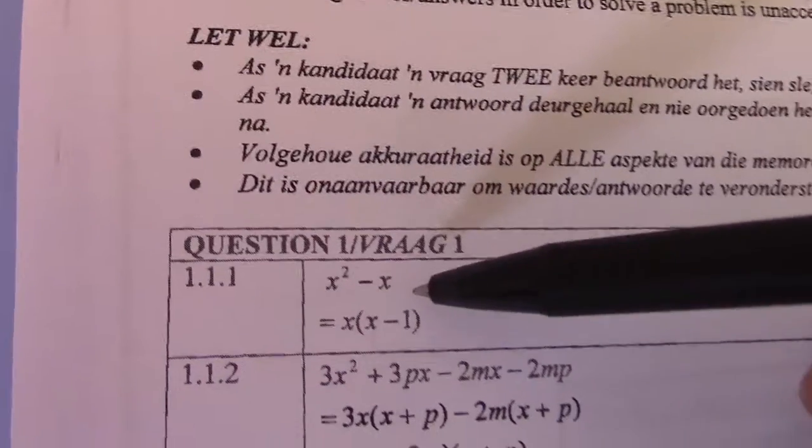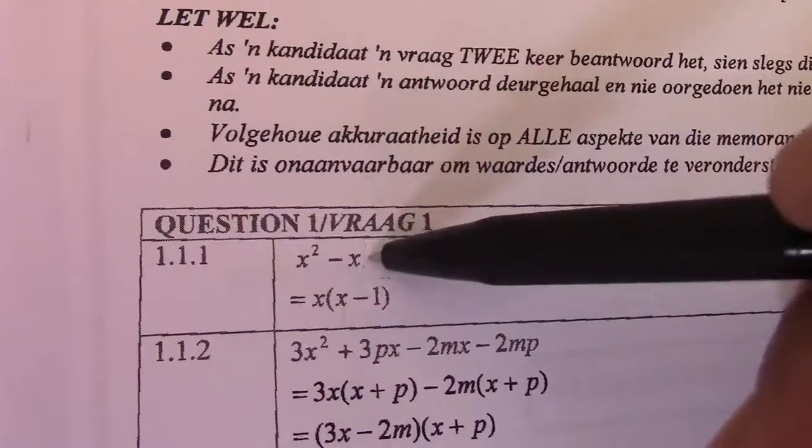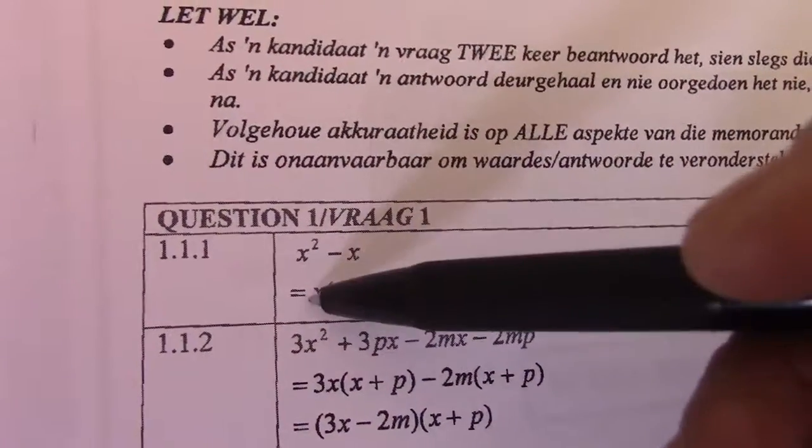So, if you look at solving this, there we have x squared minus x. Now, you can see on either side, I can remove an x.